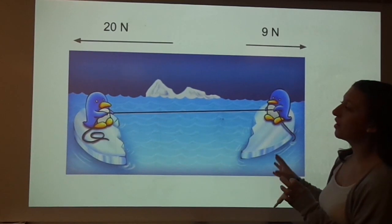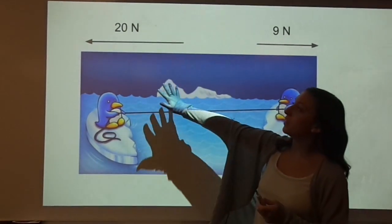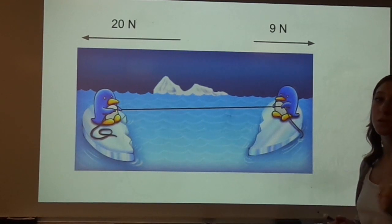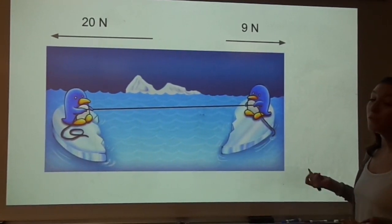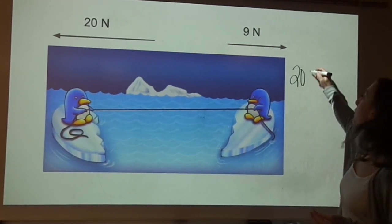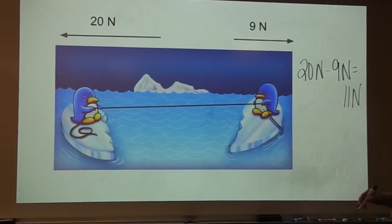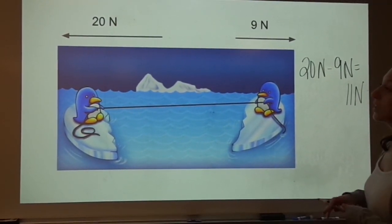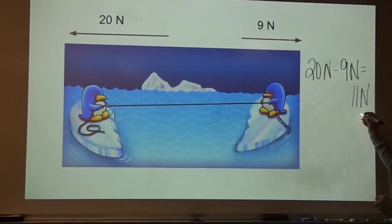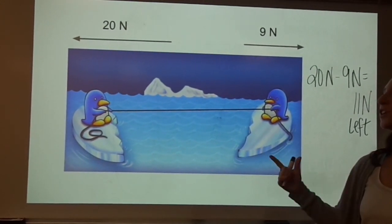For our last example, we have two penguins exerting forces on a rope — similar to tug of war. One penguin is pulling with 20 newtons to the left, and the other is pulling with 9 newtons to the right. Since two forces are acting in opposite directions, we subtract them — keeping the larger number first: 20 newtons minus 9 newtons equals 11 newtons. The direction follows the larger force, so it's 11 newtons left. This is an unbalanced force, so speed and/or direction is going to be changing.